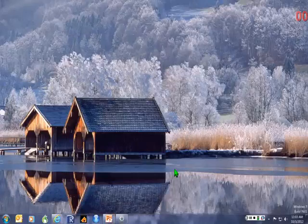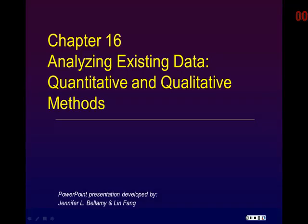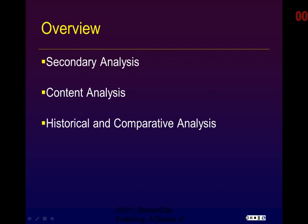Chapter 16: Analyzing Existing Data. In this podcast, we're covering Chapter 16 from Rubin and Babbie's Research Methods for Social Workers. We'll be providing an overview of analyzing existing data, secondary data analysis, content analysis, historical and comparative analysis. Each of these methods allows researchers to study a phenomenon both on a budget and without causing any further intrusion.